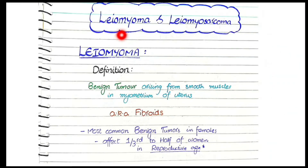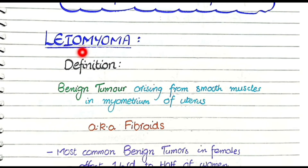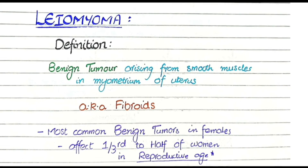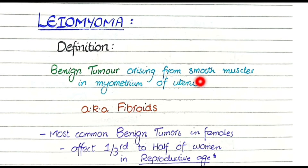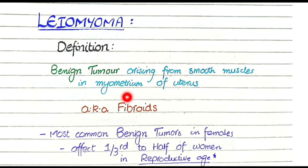In this video we will discuss the pathological features of leiomyoma and leiomyosarcoma. The word leiomyo means smooth muscles and the word oma means benign tumor. So leiomyomas can be defined as benign tumors arising from smooth muscle cells in the myometrium of the uterus. The uterus is lined by three layers: endometrium, myometrium, and perimetrium, and it is the myometrium that contains smooth muscle. So if these smooth muscles undergo neoplasia and become a benign tumor, this is leiomyoma.